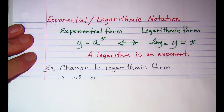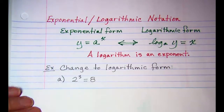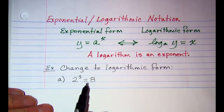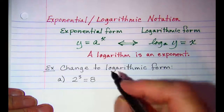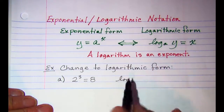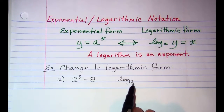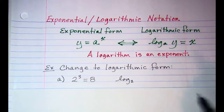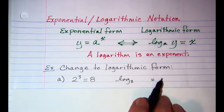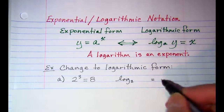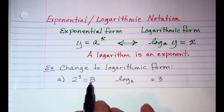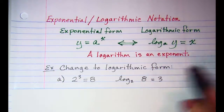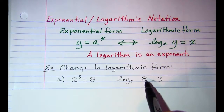Now let's change to logarithmic form. We'll start with this equation and write it in logarithmic form. The base of our exponential is 2, which means the base of our logarithm is 2. The base of the logarithm is a subscript, written small and down low. A log is an exponent, so our exponent here, 3, is what the log is equal to. And our argument is what the exponential is equal to, so we have 8. This is the log base 2 of 8 equals 3.